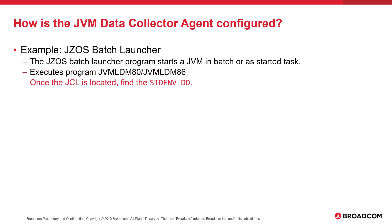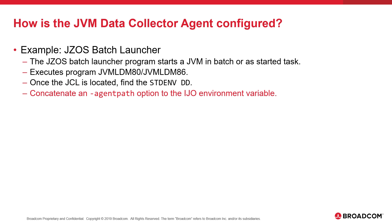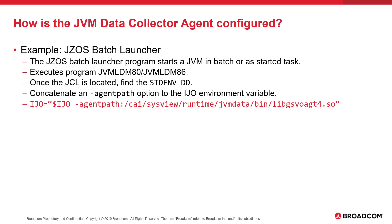Once you locate the JCL you wish to run the JVM Data Collector Agent in, find the standard environment DD. You will need to concatenate an appropriately structured AgentPath option to the existing IJO environment variable. IJO stands for IBM Java Options. The first part of the statement sets the IJO environment variable. The $IJO references what has already been set, effectively concatenating the prior IJO value with whatever follows. The last part of the statement is the new AgentPath option.